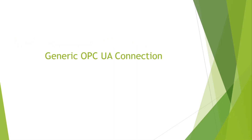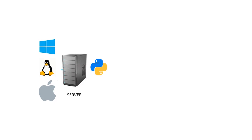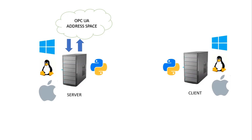Before starting, let's discuss the generic way which we have been using for OPC UA protocol. We have a server machine that can run Windows, Linux, or Mac OS. We have installed Python and the free OPC UA library, and we have created our address space with object nodes, root nodes, parameters, and all the variables we want. There is also a client that has installed everything, and it simply makes a connection to the server. The server accepts the connection and returns all the data to the client, and this keeps happening every time the client makes a call.